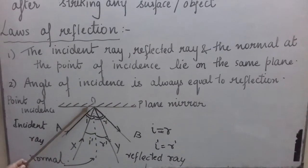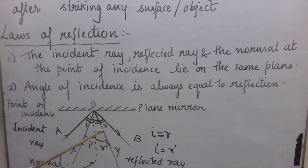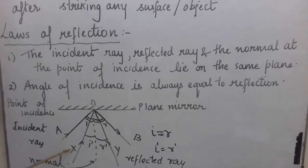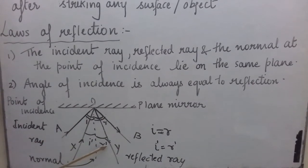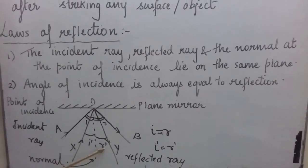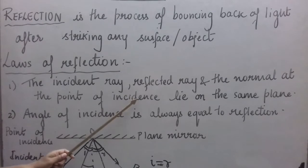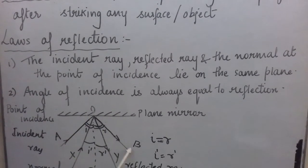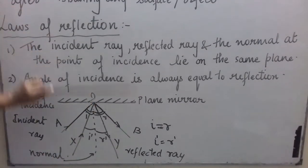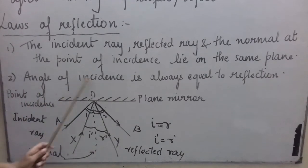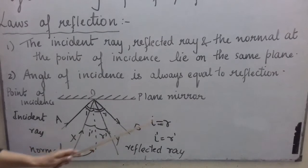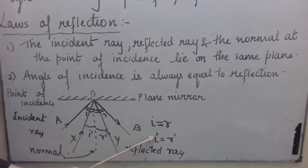Whenever light is incident, it bounces back into the same medium after striking the mirror, falling on the other side of the normal such that R is equal to I. If I choose incident ray XO making angle I' with the normal, then the reflected ray will be OY which makes angle R' with the normal such that I' is equal to R'. So both laws of reflection have been covered: the incident ray, reflected ray, and normal lie on the same plane; and the angle of incidence always equals the angle of reflection.